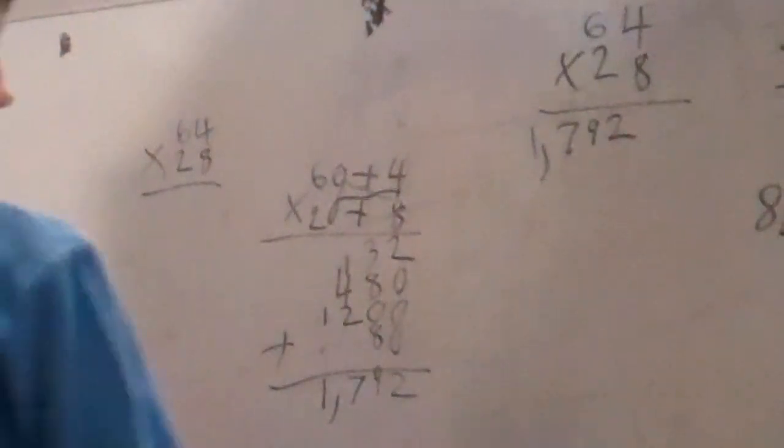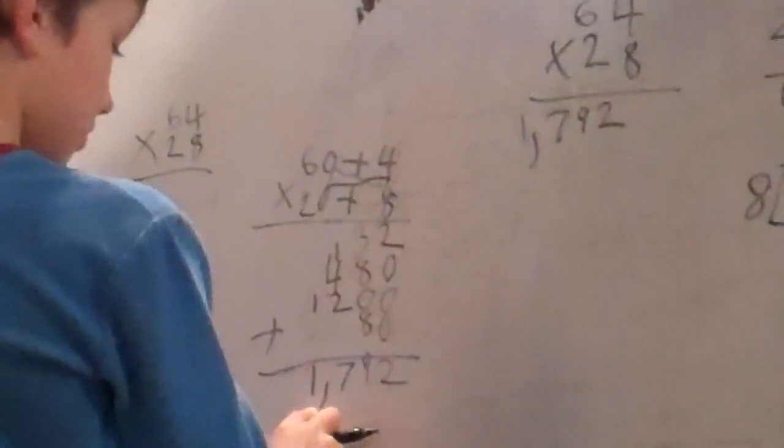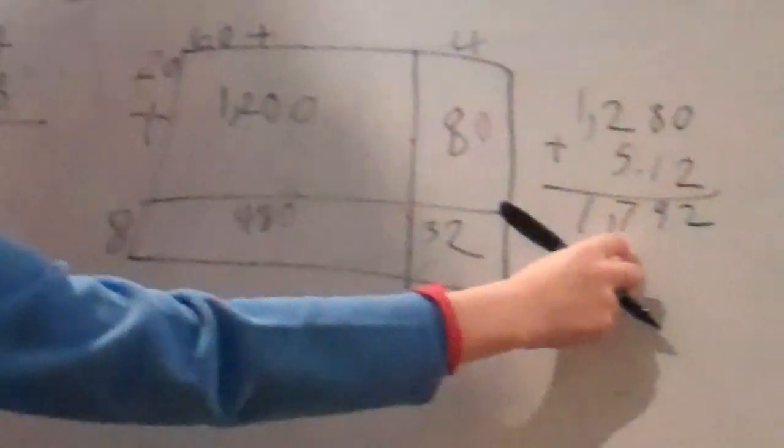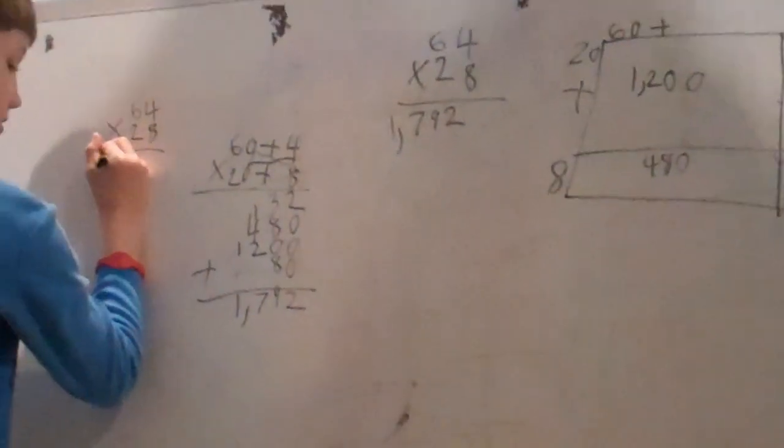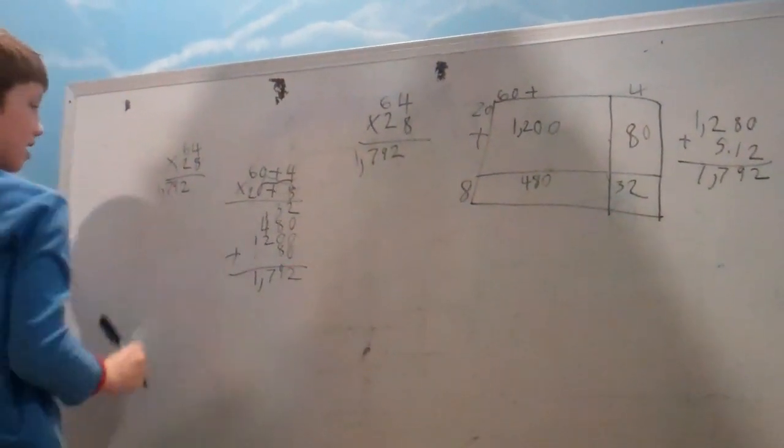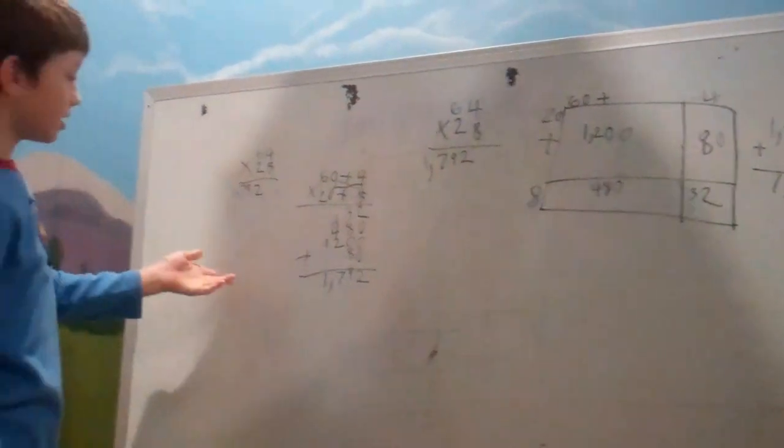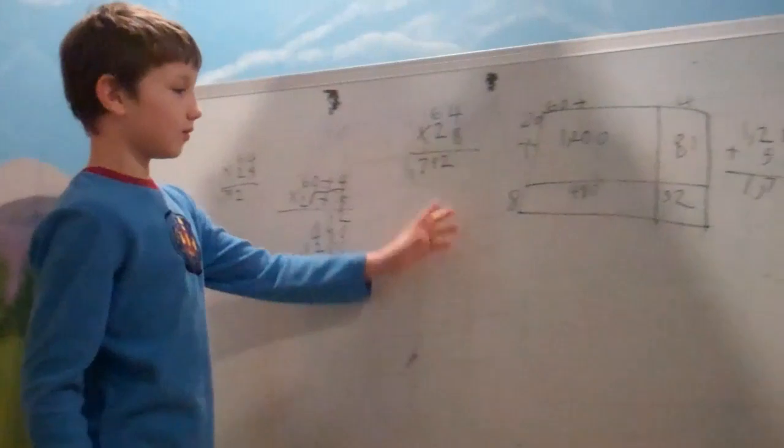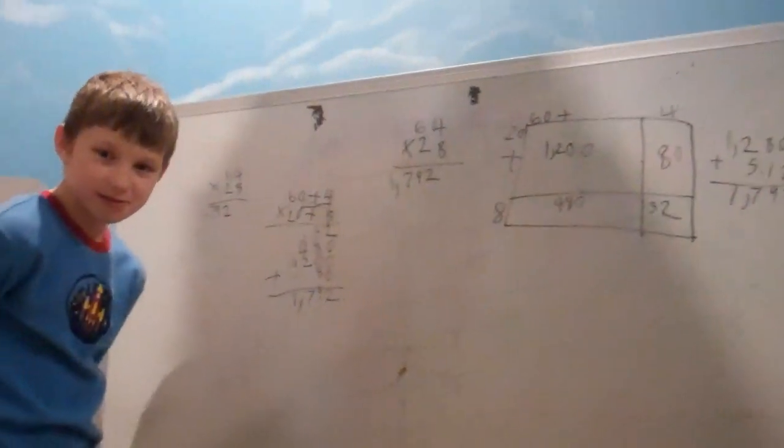And that equals, see, I got the same answer right here. One thousand seven hundred ninety two. Window pane right over here. One thousand seven hundred ninety two. So one thousand seven hundred ninety two. It's always times. Bow tie and window pane. There you go. Thank you.